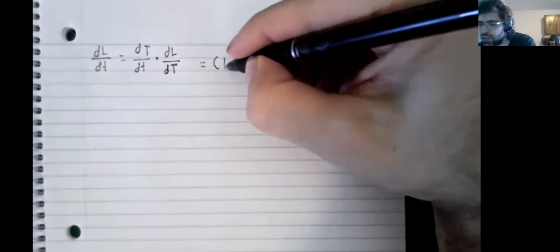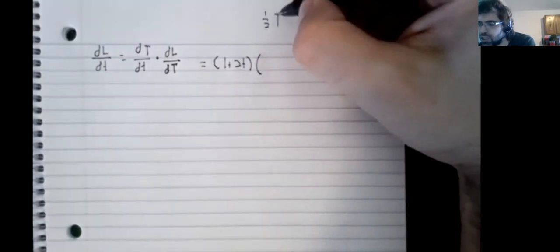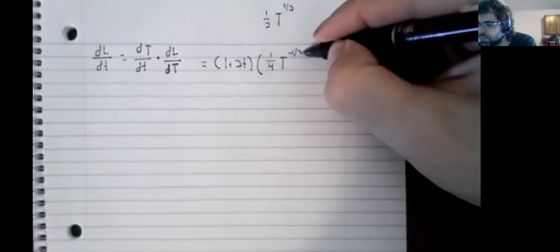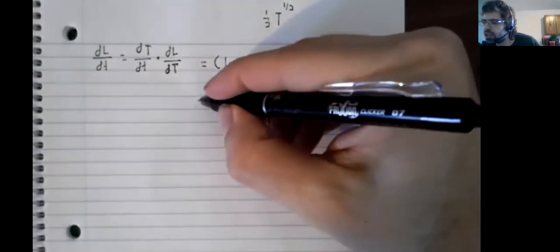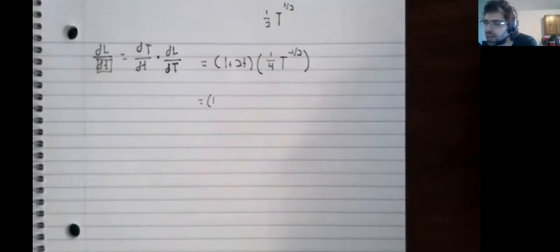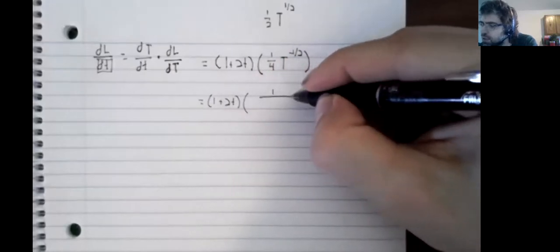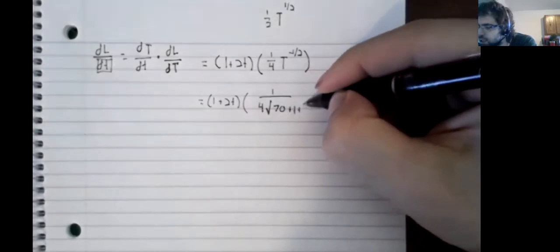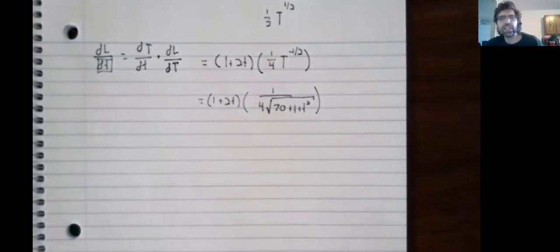So, we multiply the derivatives together. Let's see, one half t to the one half, when we take that derivative, it becomes one fourth. And now, our variable is time. So, capital T, we don't want to have that. Fortunately, we know what capital T is, so we can get rid of it.